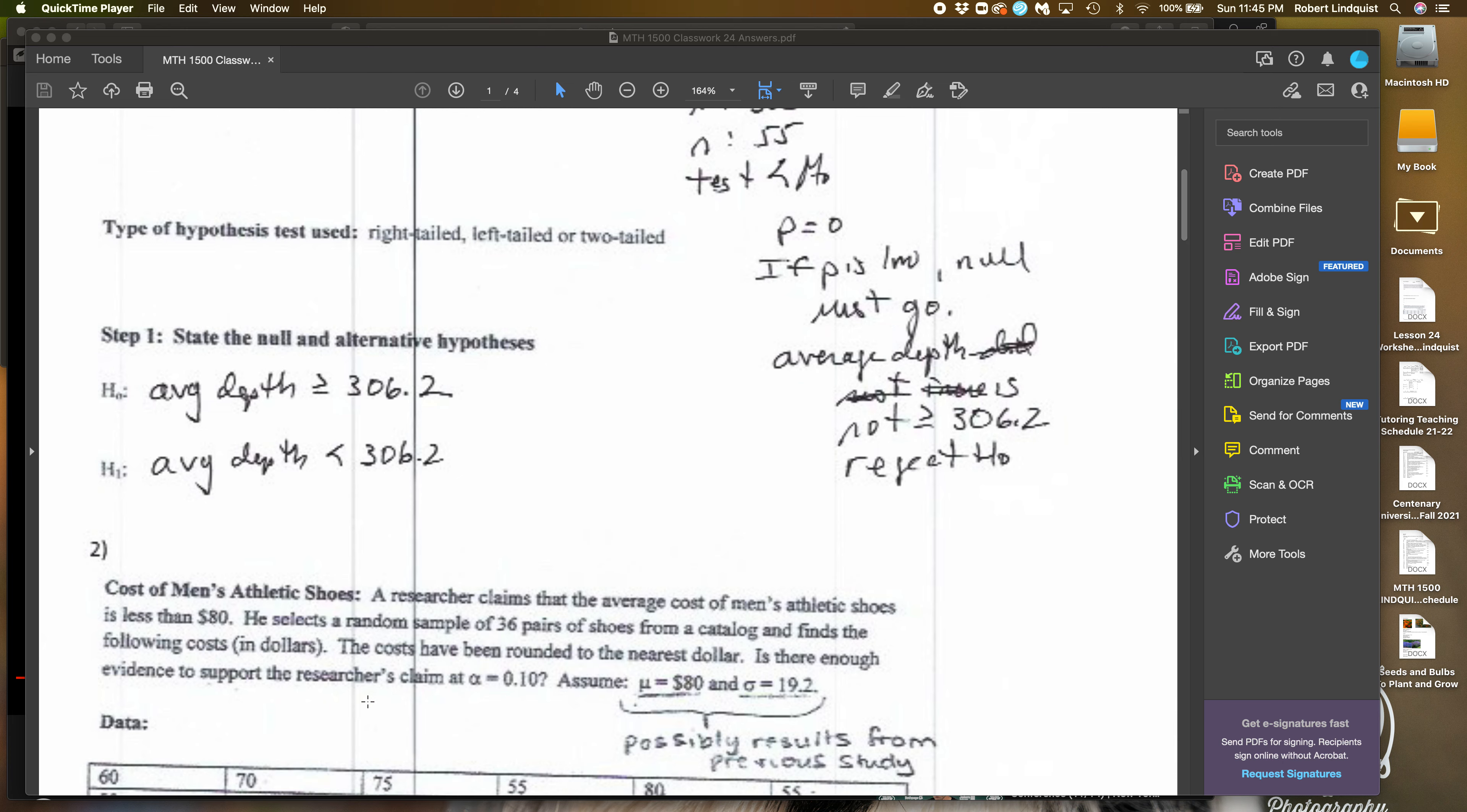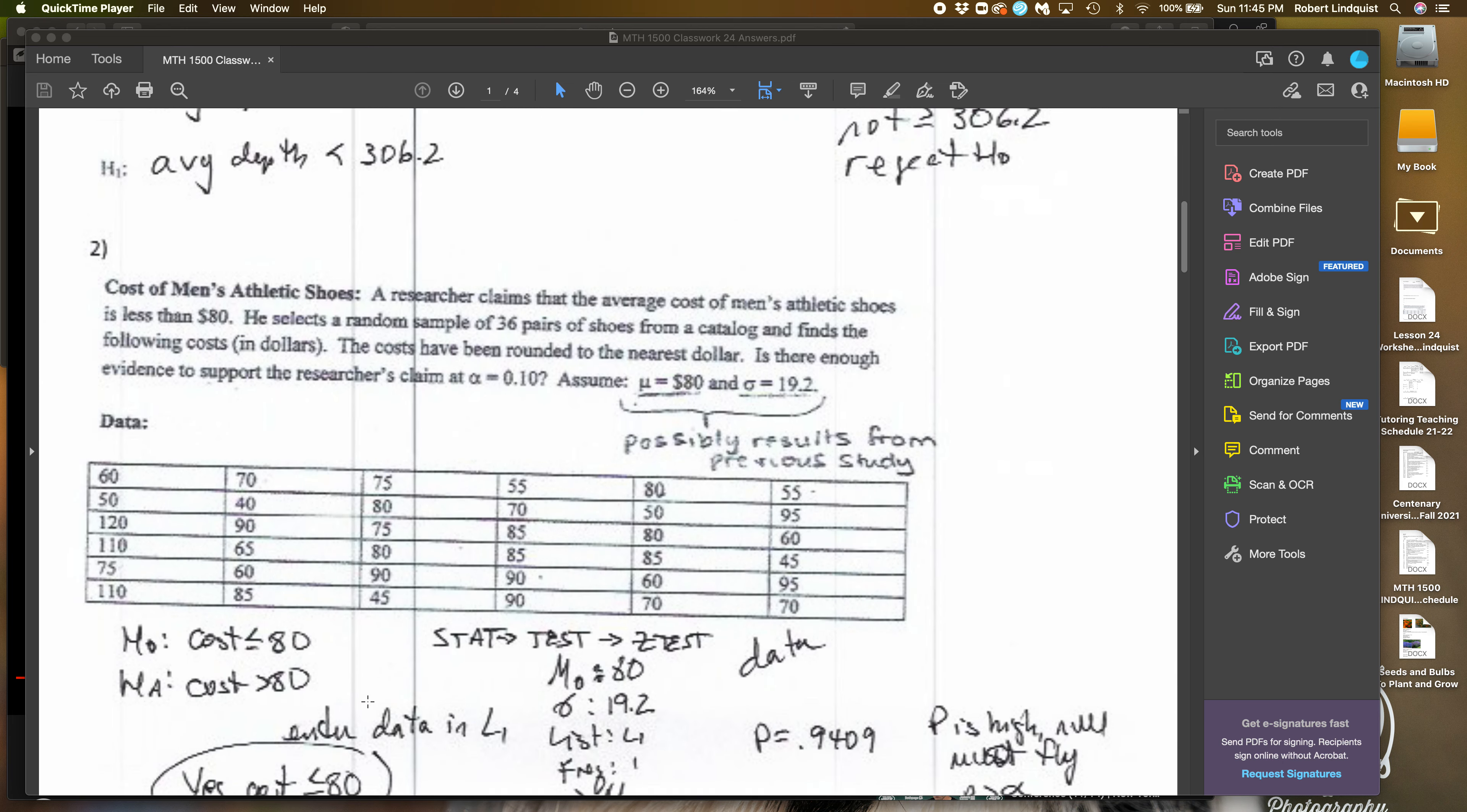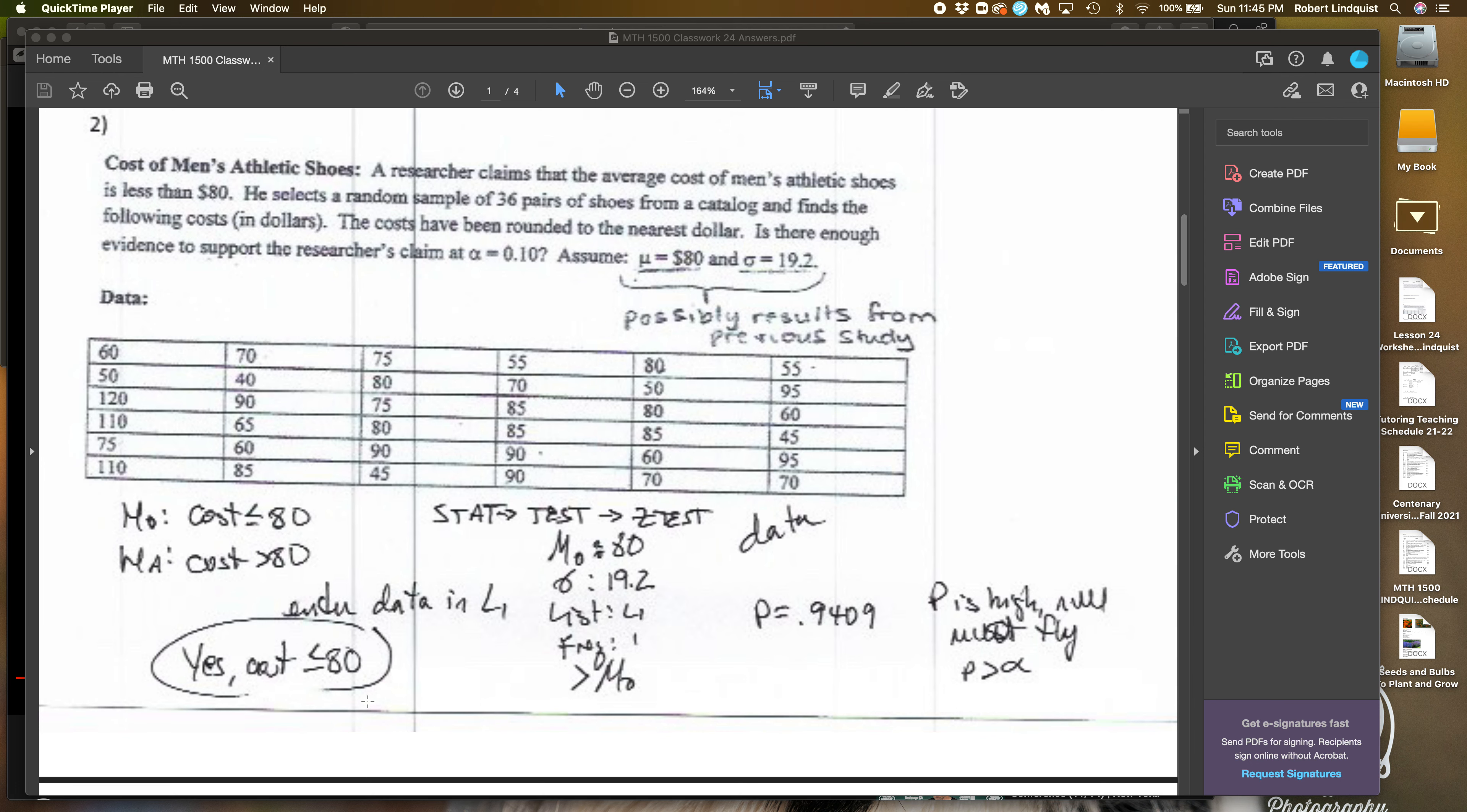So now we go to the second problem. And in the second problem, what we're going to do is we're going to input all of this data into L1 before we start. So the first thing we do is we put all of this data into L1. The cool thing about that is it makes what we're going to enter less because once the data is in, the calculator will figure certain things out. This problem is all about whether the average cost of men's shoes is less than $80. That's what the researcher claims. So that'll be the null hypothesis, that if the cost is less than or equal to $80, the alternative is its cost is greater than $80.